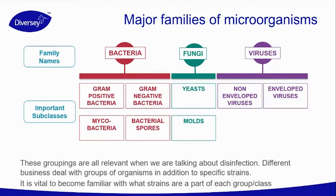On the left side we have bacteria, with four subclasses relevant for us to understand: gram-positive bacteria and gram-negative bacteria, which we'll discuss in this module. Then we have two specific classes: mycobacteria, and bacteria that produce spores such as Clostridium difficile or Bacillus subtilis. The second family is fungi with yeast and mold. Lastly, viruses with non-enveloped viruses and enveloped viruses.